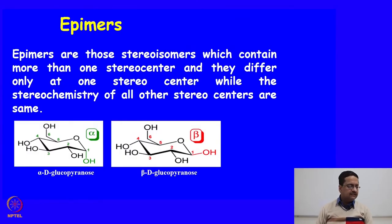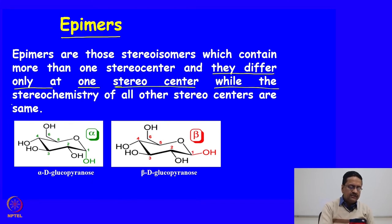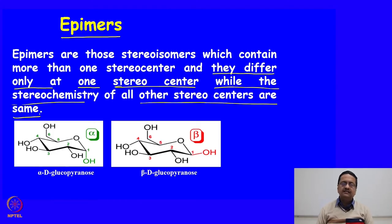We now move to the next part of this course where we will try to understand other different possible isomerisms. We need to learn what are epimers. Epimers are those compounds which contain more than one stereocenter and those two compounds differ only at one stereocenter while the stereochemistry of all other stereocenters are the same. This means if you have a compound with multiple stereocenters, except one all stereocenters have the same R or S designation and there is a difference at only one stereocenter. Those compounds are called epimers.